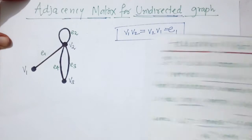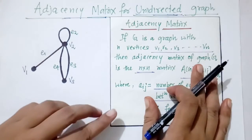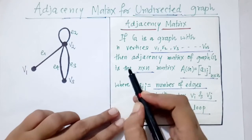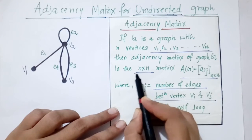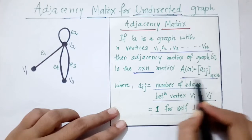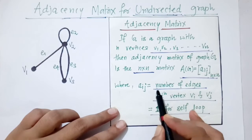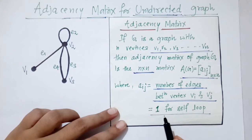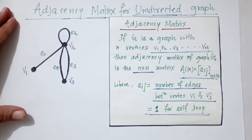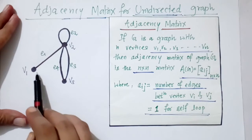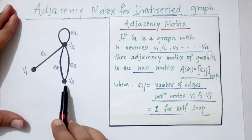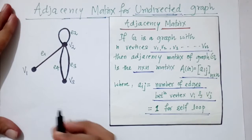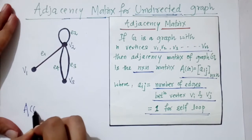For this, if we have a graph G with n vertices v1, v2, v3 up to vn, then its adjacency matrix is a matrix of order n×n, where the element aij is the number of edges between vertex vi and vj. Also, aij equals 1 for a self-loop. Since this graph has three vertices v1, v2, v3, the adjacency matrix is of order 3×3.